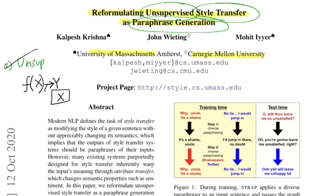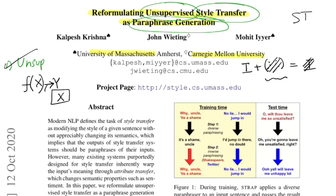Now talking about style transfer — you probably already know about it in computer vision, where the idea is to do image-to-image translation. You're given an input image and a certain pattern — dots or lines — and the output is an image painted or textured with those patterns. This is essentially style transfer in the computer vision domain.